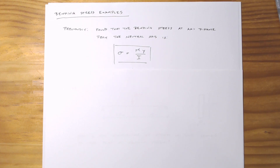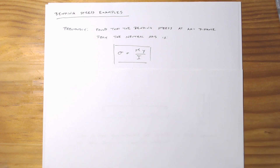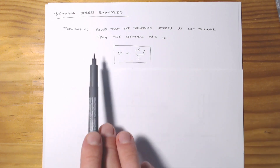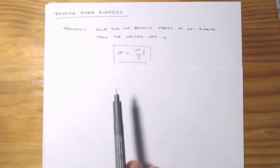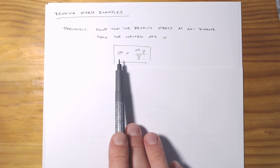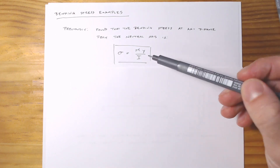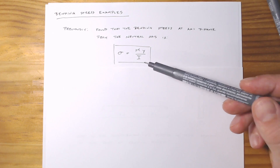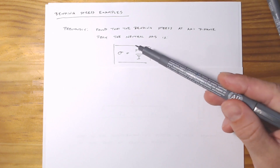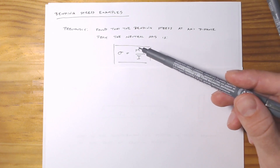In our previous video, we had derived what the bending stress would be at any point across a cross-section. After about an hour's worth of derivation and some free-body diagrams, we arrived at what's actually a relatively simple equation where the stress due to bending at any distance away from the neutral axis is simply going to be the applied moment at a given situation.